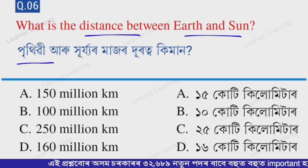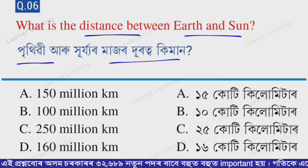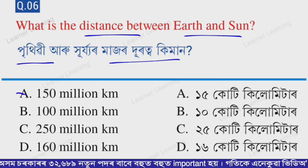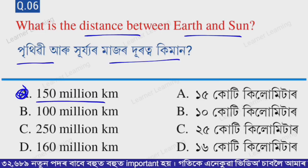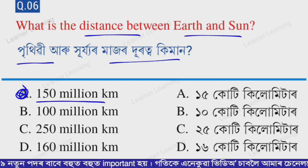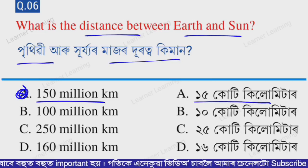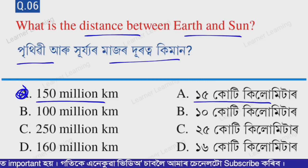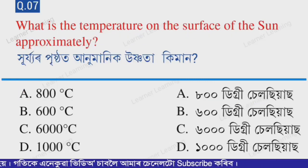Next question: What is the distance between Earth and the Sun? Select from the options. Option A — 150 million kilometers. That is 15 crore kilometers. That is the distance between Earth and the Sun.